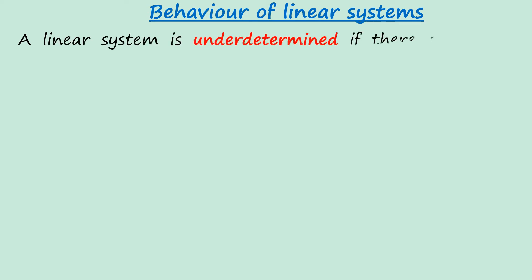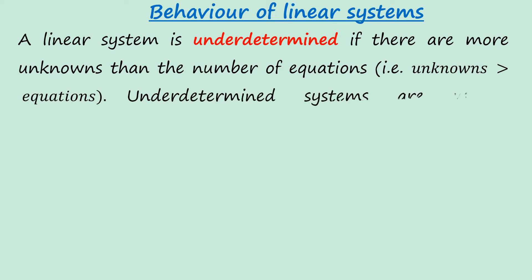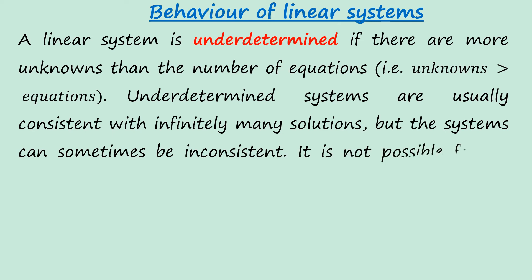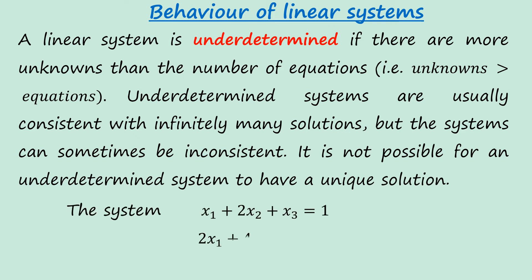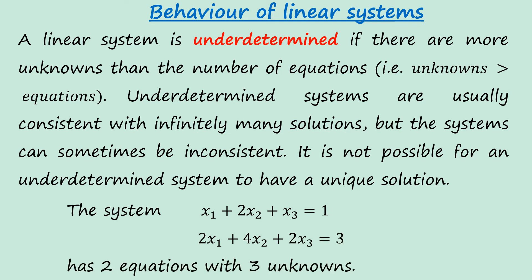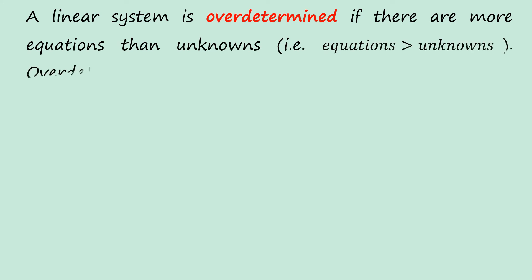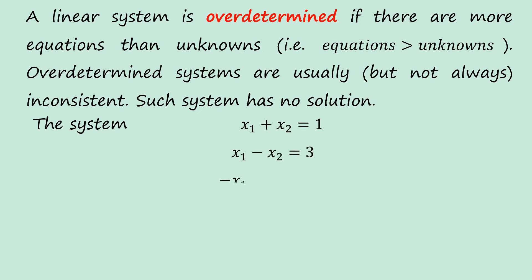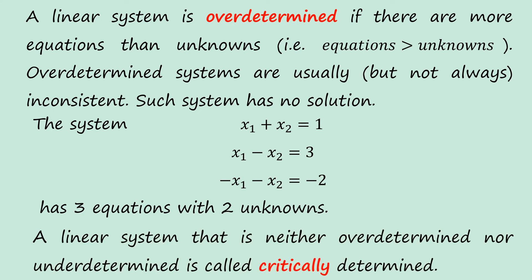A linear system is underdetermined if there are more unknowns than equations. Underdetermined systems are usually consistent with infinitely many solutions, but can sometimes be inconsistent. It is not possible for an underdetermined system to have a unique solution. For example, a system with three unknowns and two equations is underdetermined. A linear system is overdetermined if there are more equations than unknowns. Overdetermined systems are usually, but not always, inconsistent and typically have no solution. For example, three equations and two unknowns is overdetermined. A system that is neither overdetermined nor underdetermined is called critically determined.